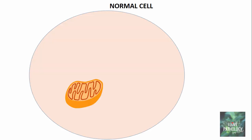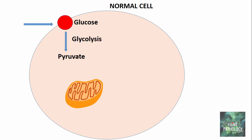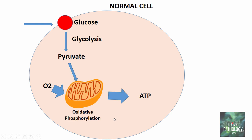Let us understand this with an illustration. In a normal cell, you have a mitochondria. A molecule of glucose is converted to pyruvate by a process called glycolysis. This pyruvate, in the presence of oxygen, enters the mitochondria and through oxidative phosphorylation generates ATP. Some part of pyruvate is also converted to lactic acid and vice versa, but the amount of lactate produced in the normal cell is very insignificant.